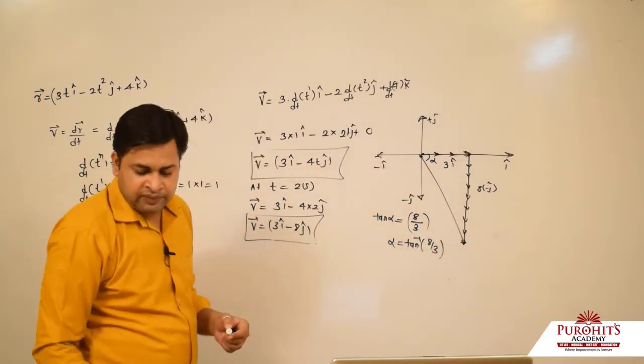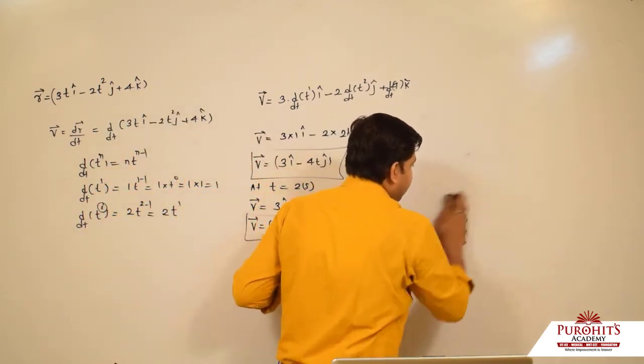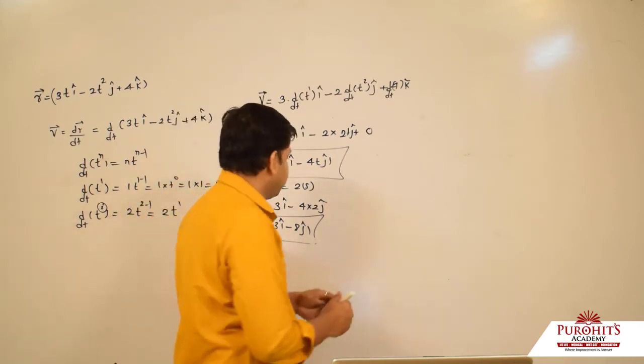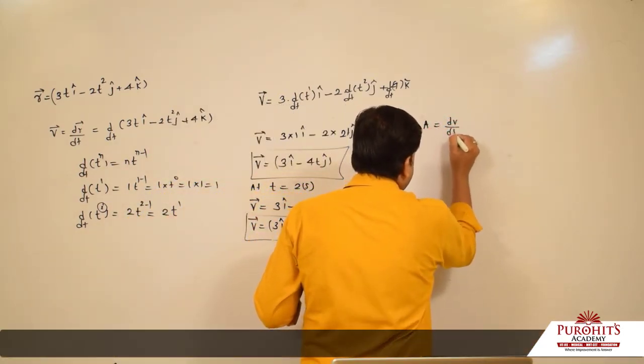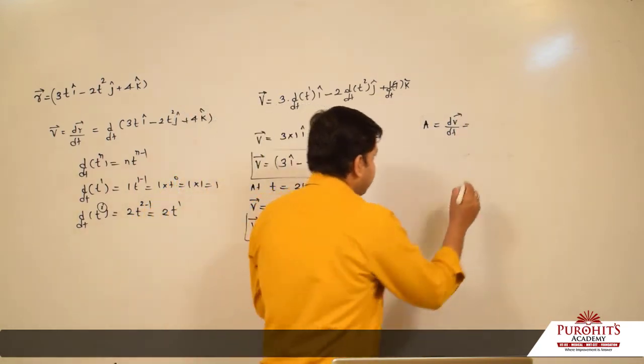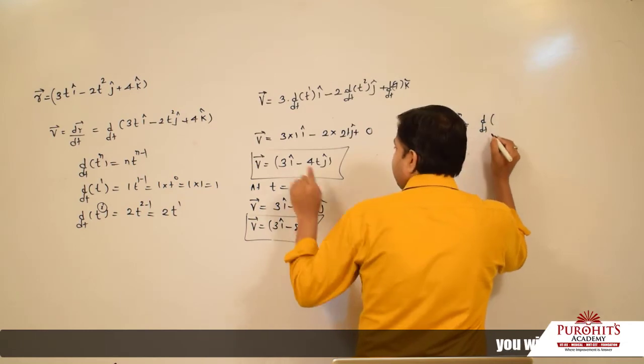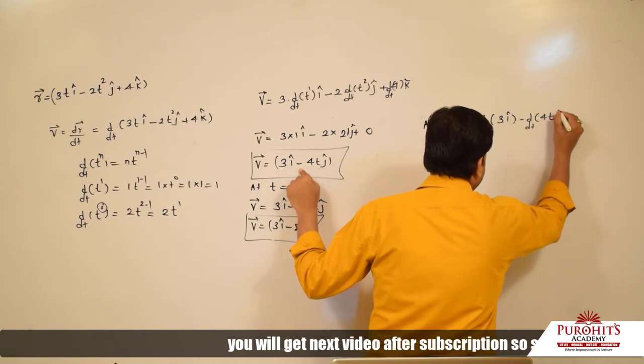How will acceleration be calculated? Rate of change of velocity is called acceleration. So the velocity expression that we have, we will differentiate it to get acceleration. Differentiation of 3 î - 4t ĵ.